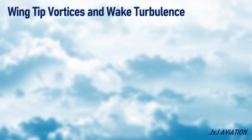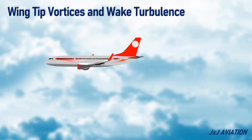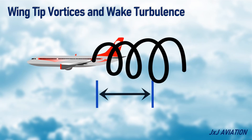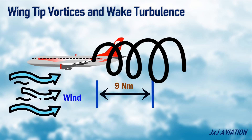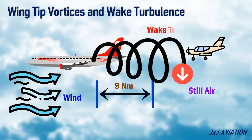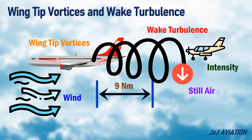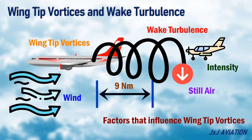Wingtip vortices can extend up to 9 nautical miles behind the generating aircraft. The vortices will move with the wind, or in still air they will sink down. When a different aircraft flies into these vortices, it encounters wake turbulence. The intensity of turbulence depends on the vortices.